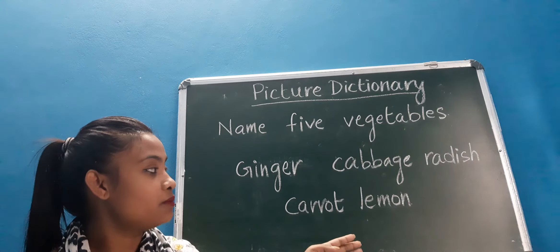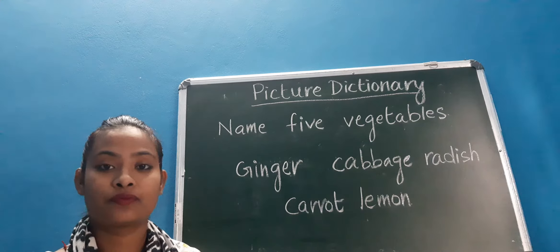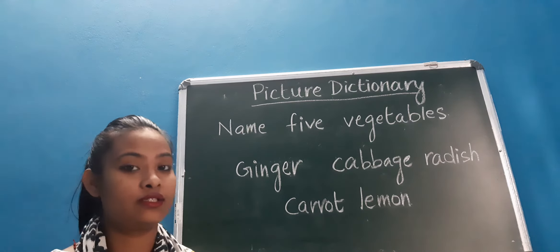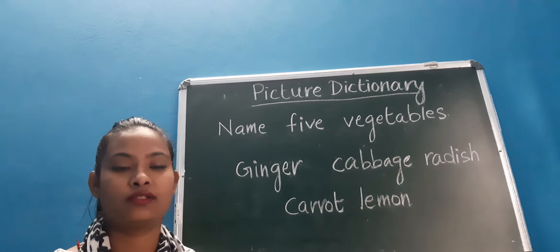Radish we sometimes eat like a salad, and we can cook it as well. It's white in color, sometimes dark pink.